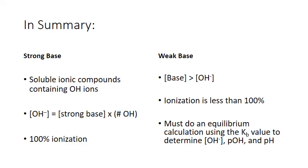In summary, strong bases are generally soluble ionic compounds that contain hydroxide ions as part of their formula. They dissolve completely, and the hydroxide ion concentration equals the concentration of the base times the number of hydroxide ions in its formula. In contrast, a weak base is generally a molecular compound with lone pair electrons that can extract a proton from water, turning it into a hydroxide ion. Ionization is less than 100% for a weak base, and we must do an equilibrium calculation using a base ionization constant Kb to determine equilibrium hydroxide concentrations, pOH values, and finally pH values.